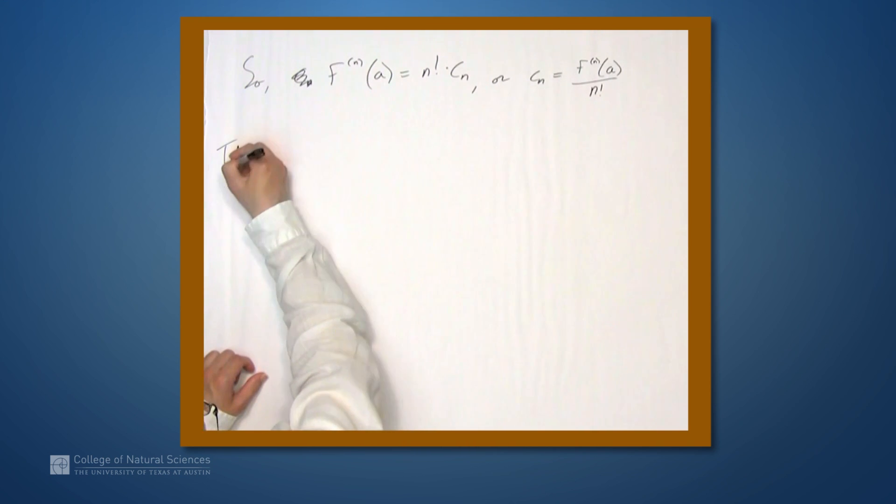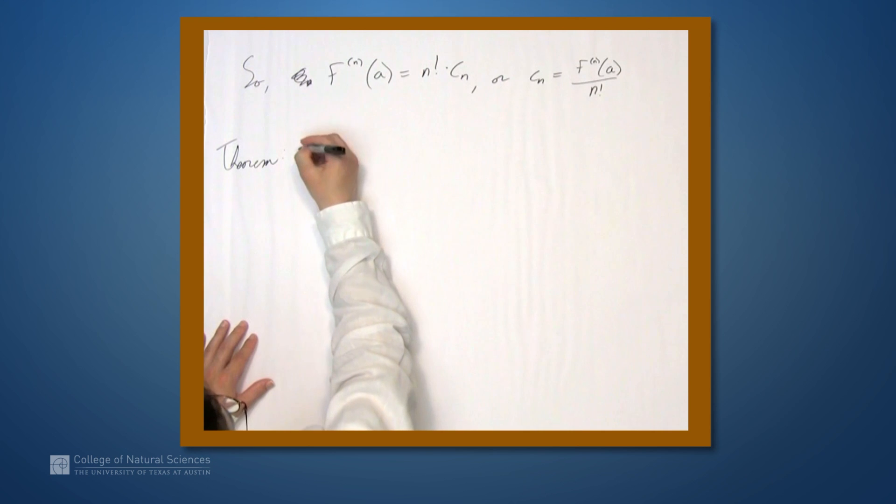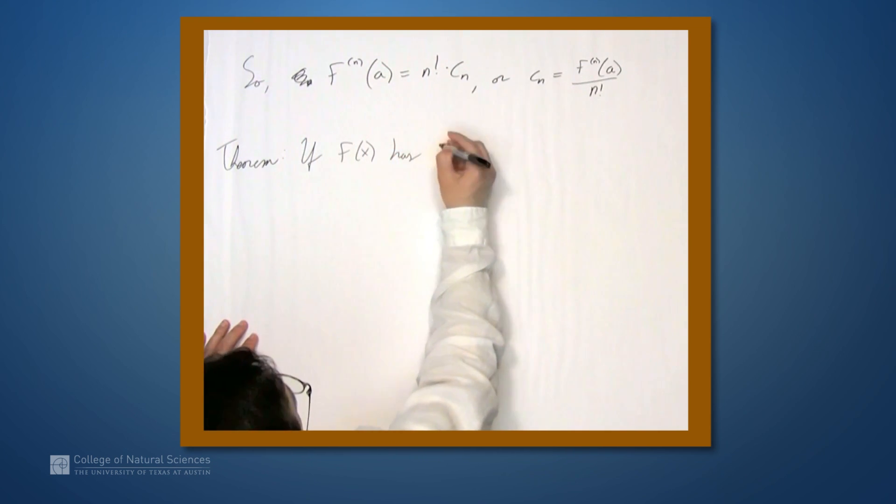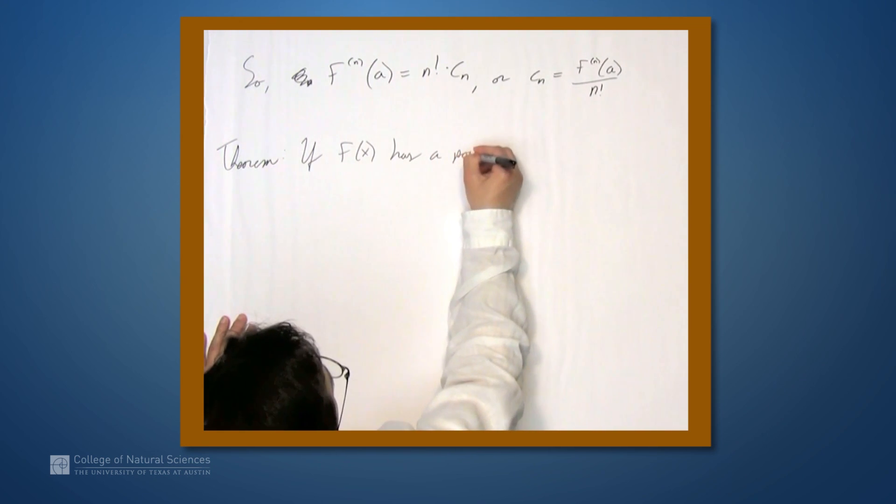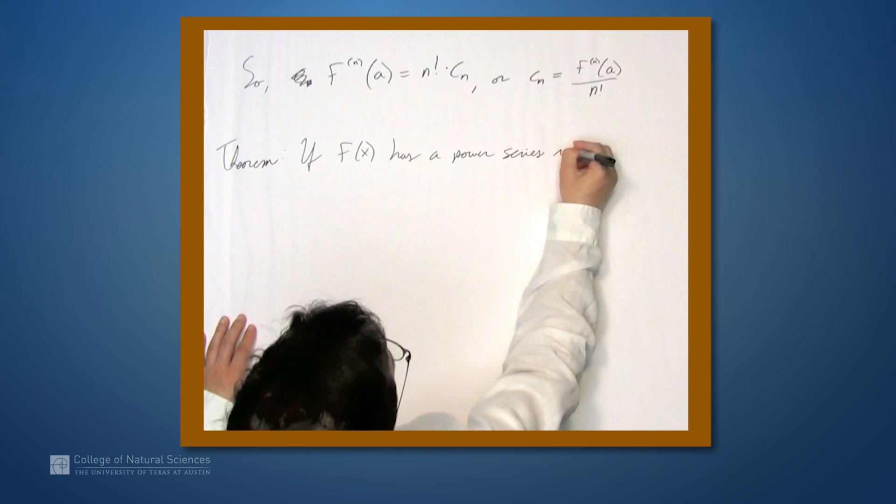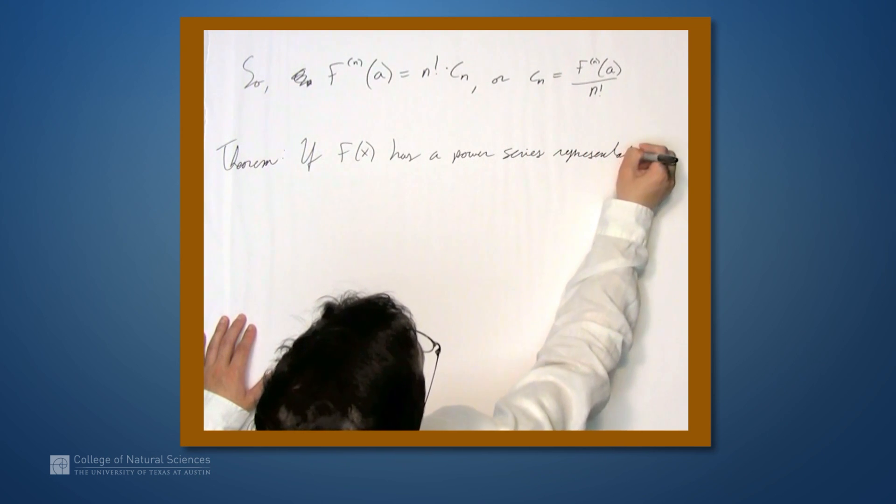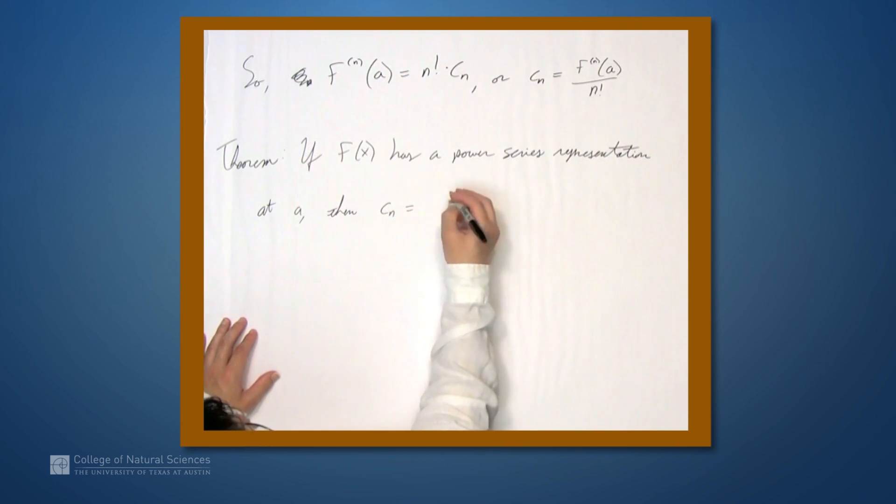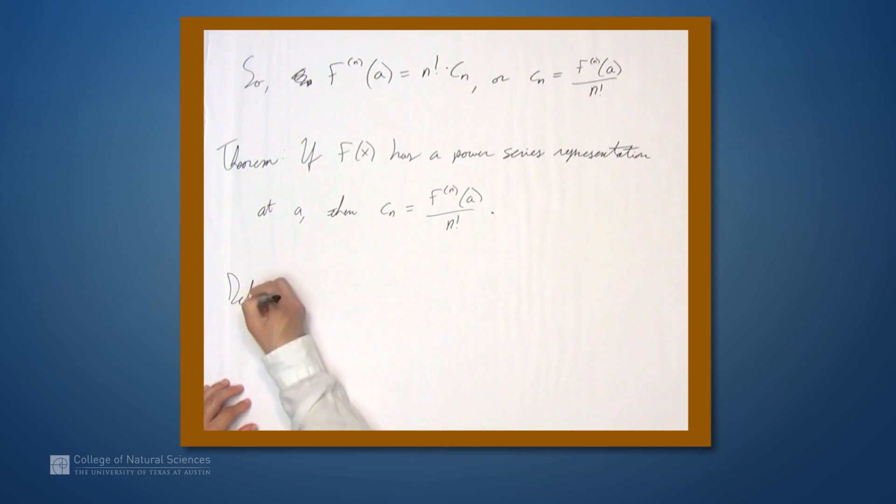So what did we just show? We have a nice theorem. If the function f has a power series representation at a, then the coefficients c sub n are given by this formula, nth derivative at a divided by n factorial.